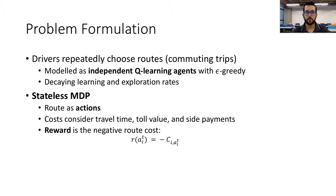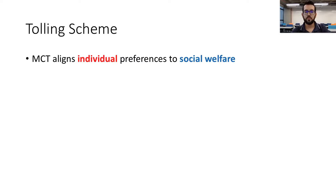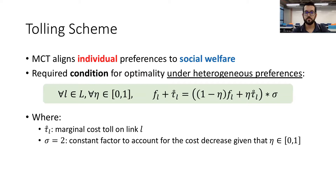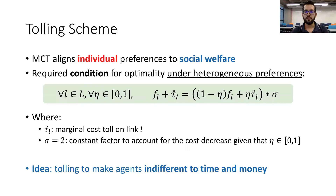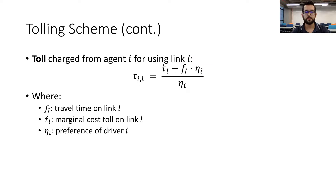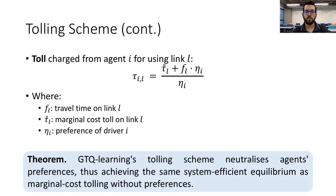The first challenge refers to heterogeneous preferences. Marginal cost tolls are known to align individual preferences to the social welfare. However, when heterogeneous preferences are introduced, agents are no longer guaranteed to select routes aligned to the social welfare. In order to overcome this issue, it is necessary to ensure that the costs under our formulation with preferences remain the same as under the original formulation. The idea is to make agents indifferent to time and money as required by the optimality condition. We therefore formulate the toll values so as to neutralize agents' preferences, meaning the user equilibrium remains aligned to the system optimum regardless of the agent's preference distribution.